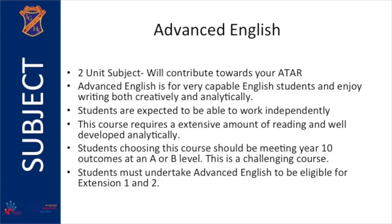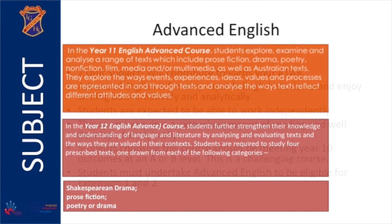Typically, high achieving students in Year 10 choose English Advanced. In Year 11 you will explore, examine and analyse a range of texts which include prose fiction, drama, poetry, non-fiction, film, media and/or multimedia, as well as Australian texts. You will explore the ways events, experiences, ideas, values and processes are represented in and through texts, and analyse the ways texts reflect different attitudes and values.